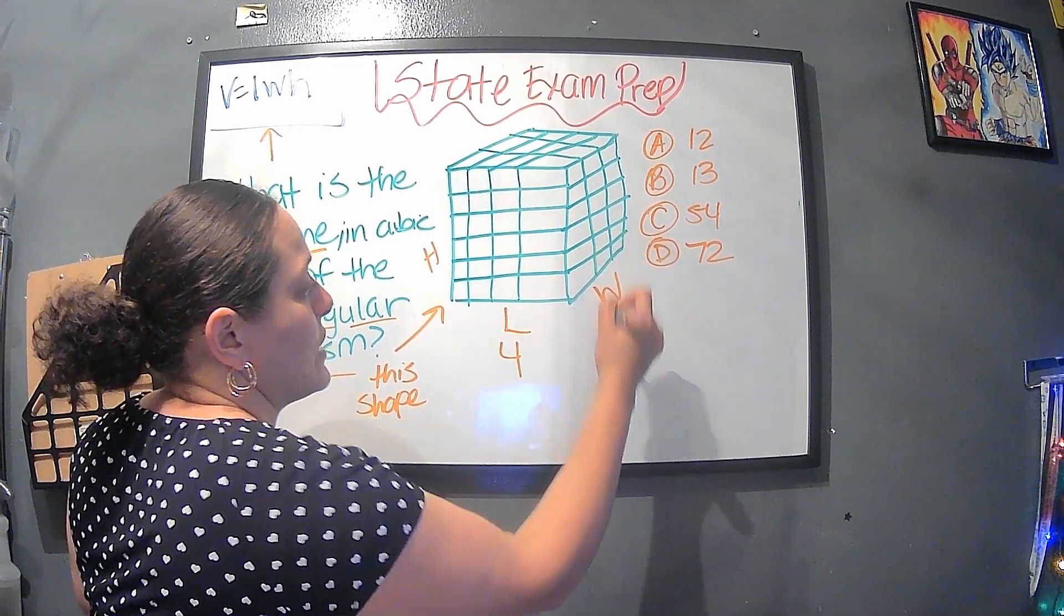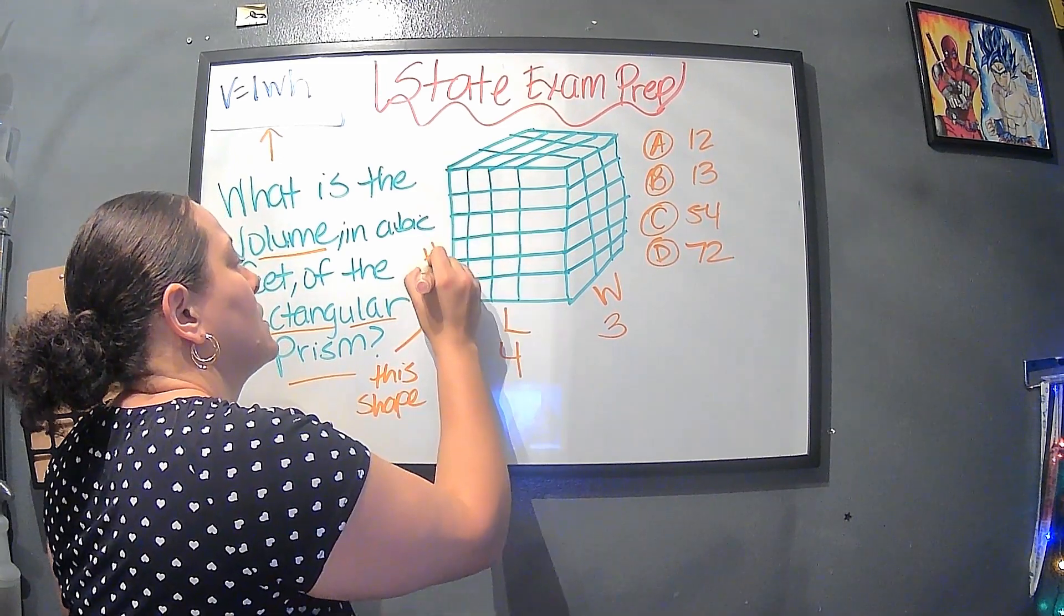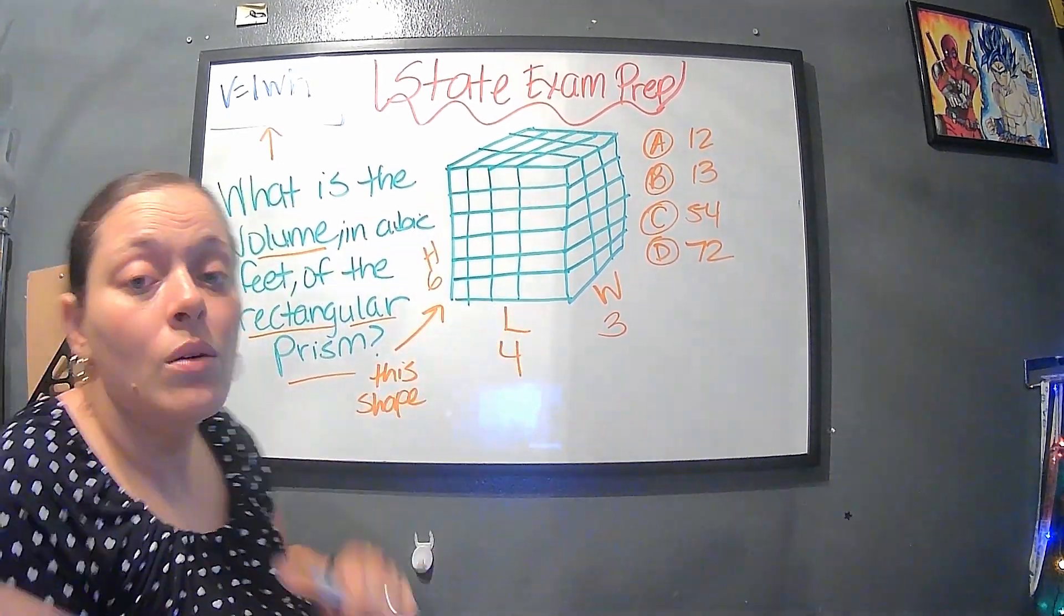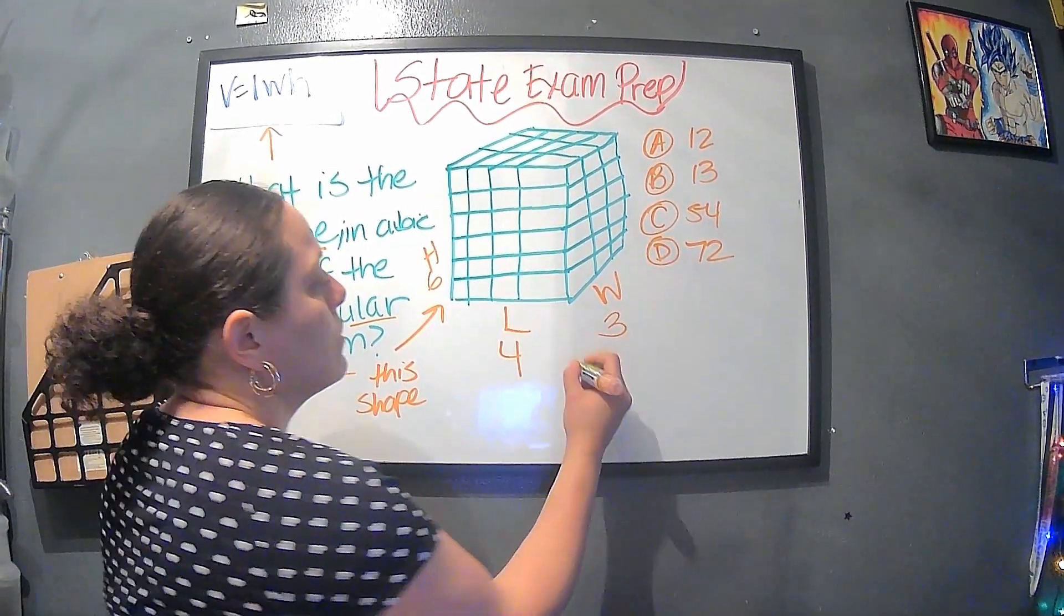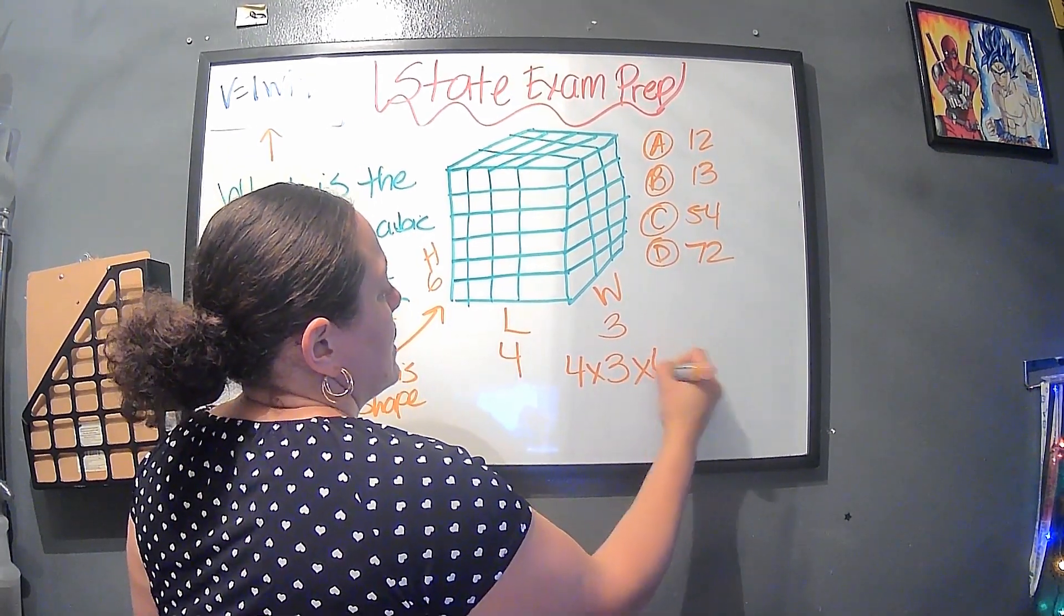We have one, two, three, four. So we have number four. Now we have one, two, three, number three. And then the height is one, two, three, four, five, six. Height is six. So now the next part is, we have to do four times three times six.